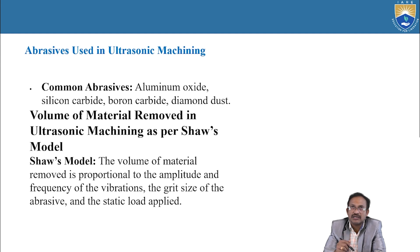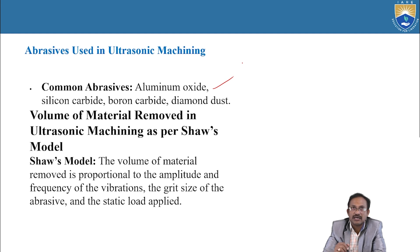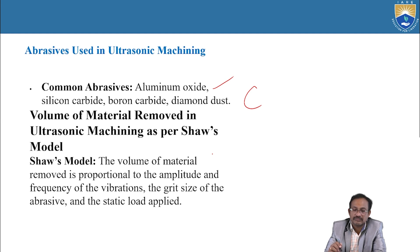Abrasives used in ultrasonic machining. Common abrasives: aluminum oxide (Al₂O₃), silicon carbide (SiC), boron carbide (B₄C), and diamond. Boron carbide is one of the main abrasive particles commonly used.